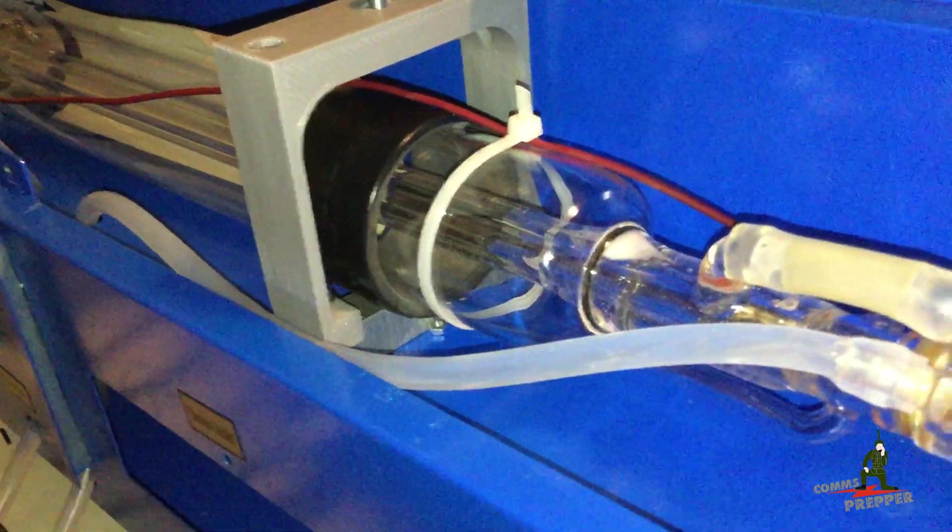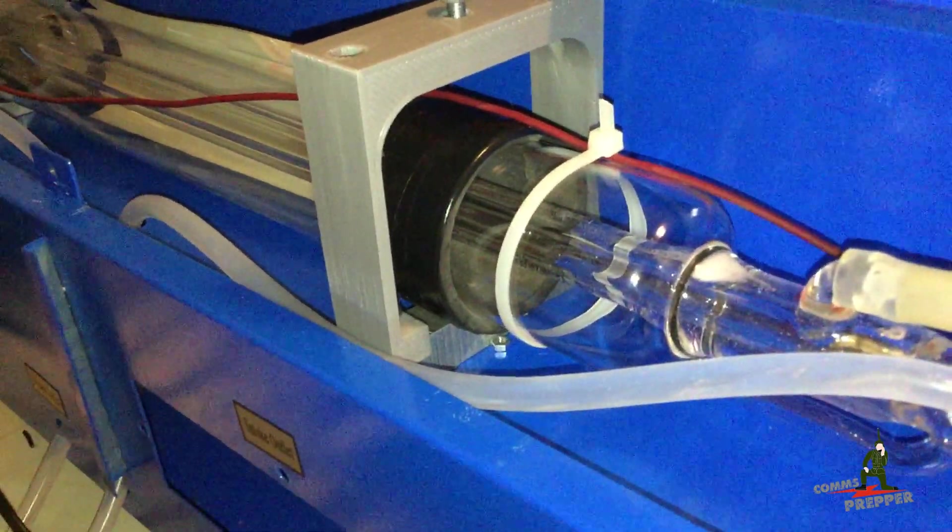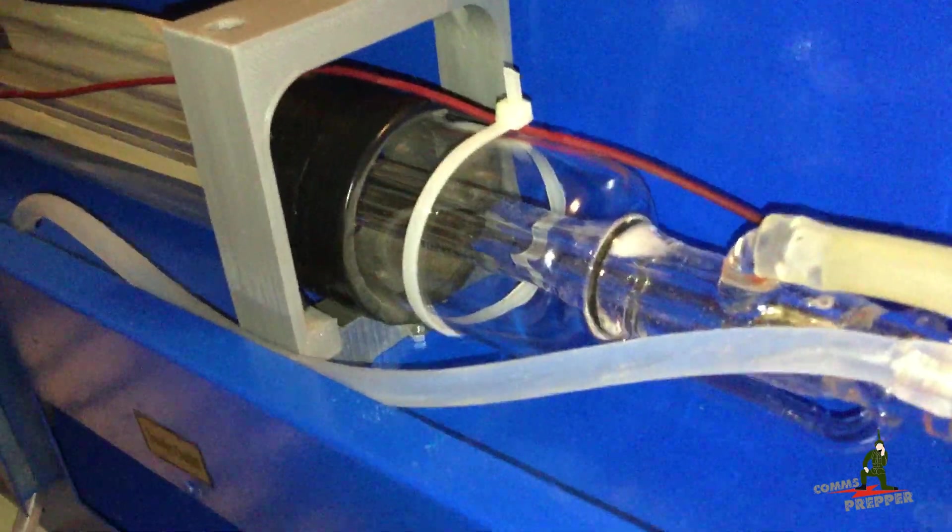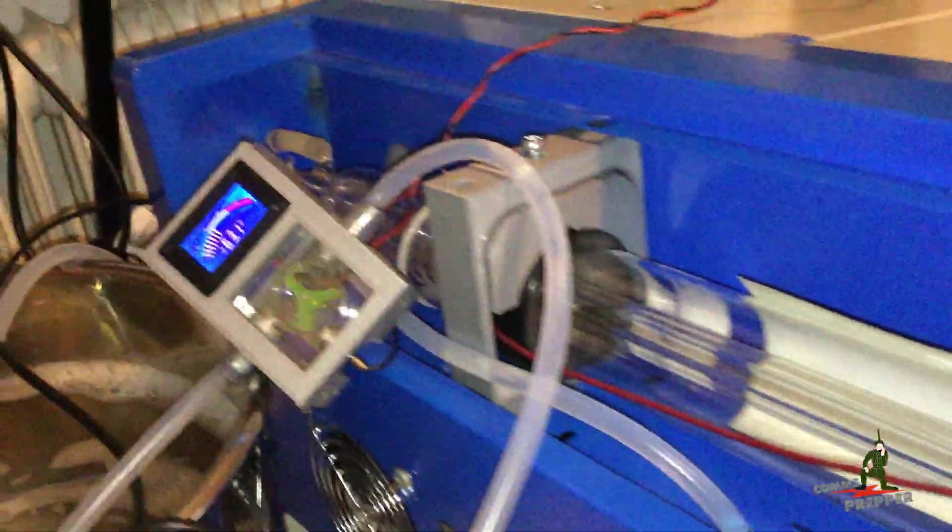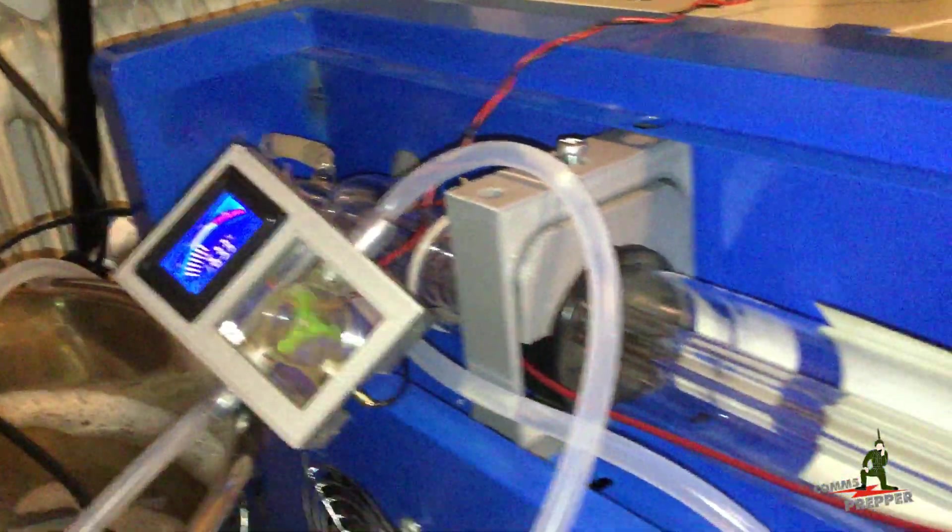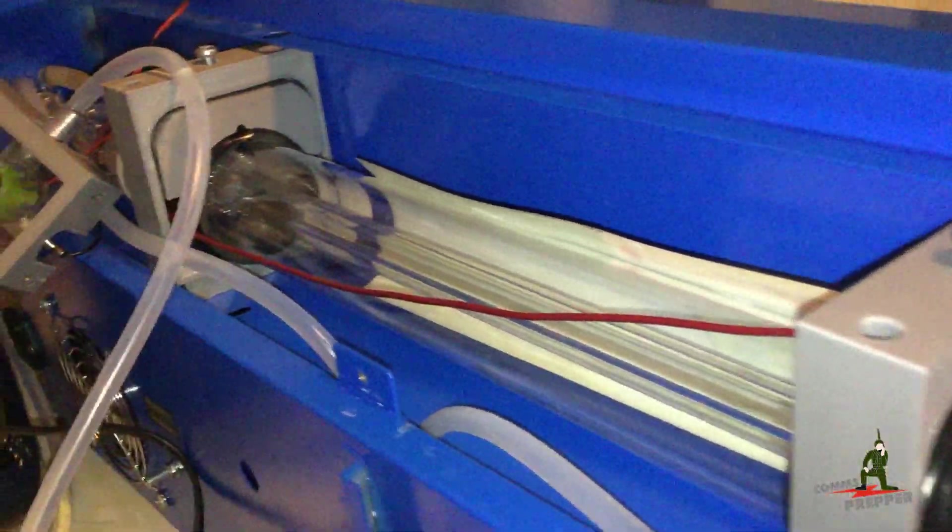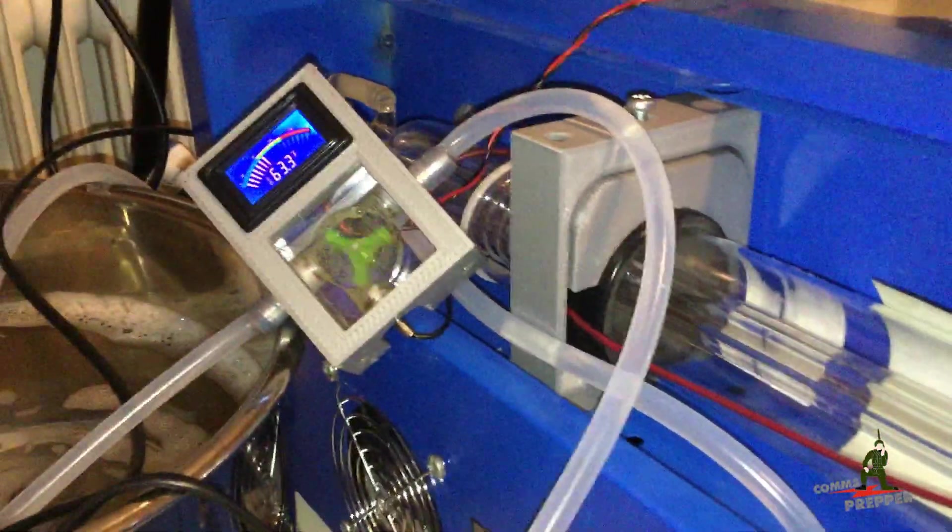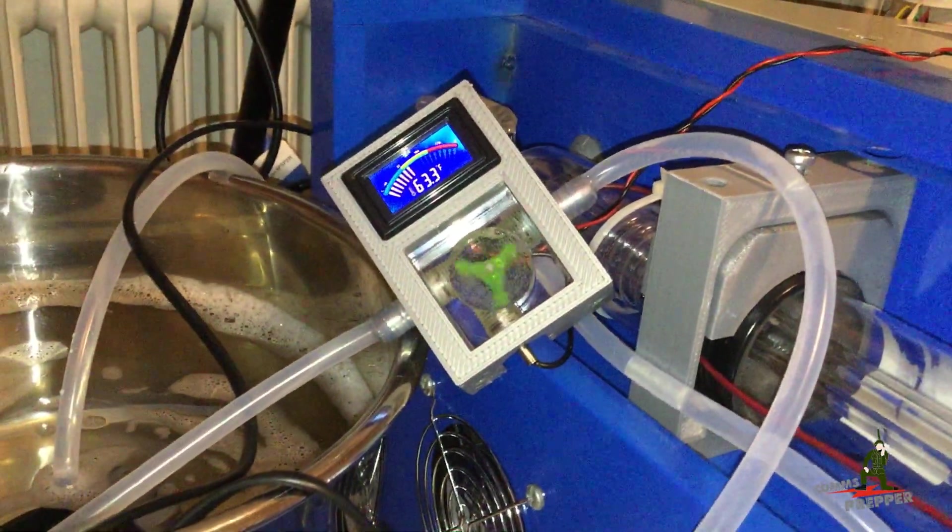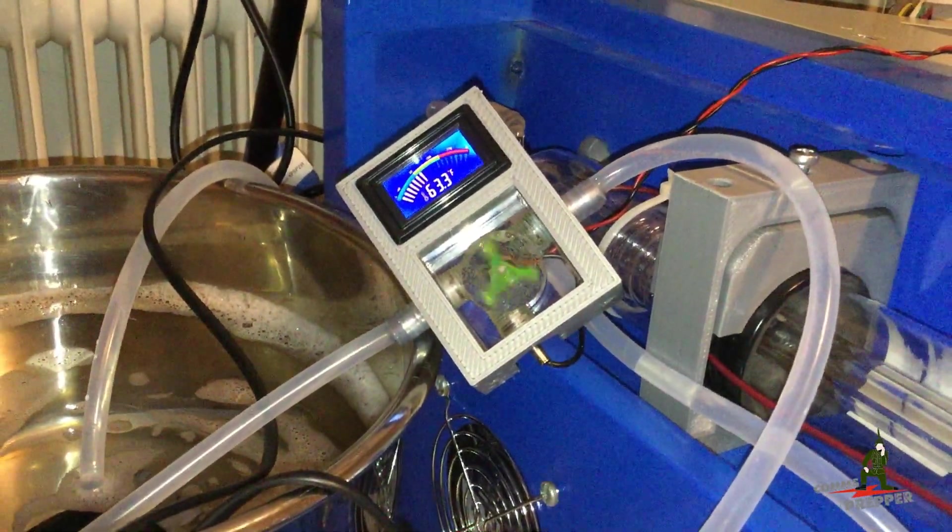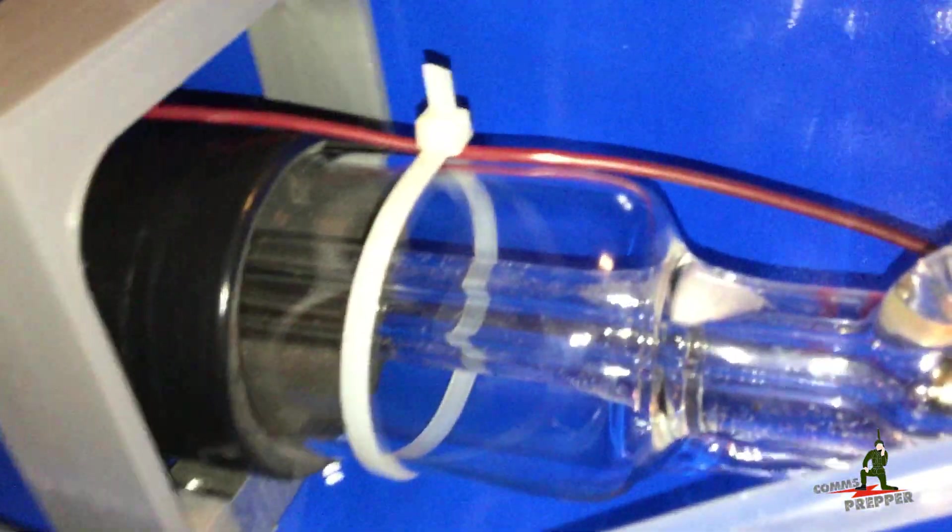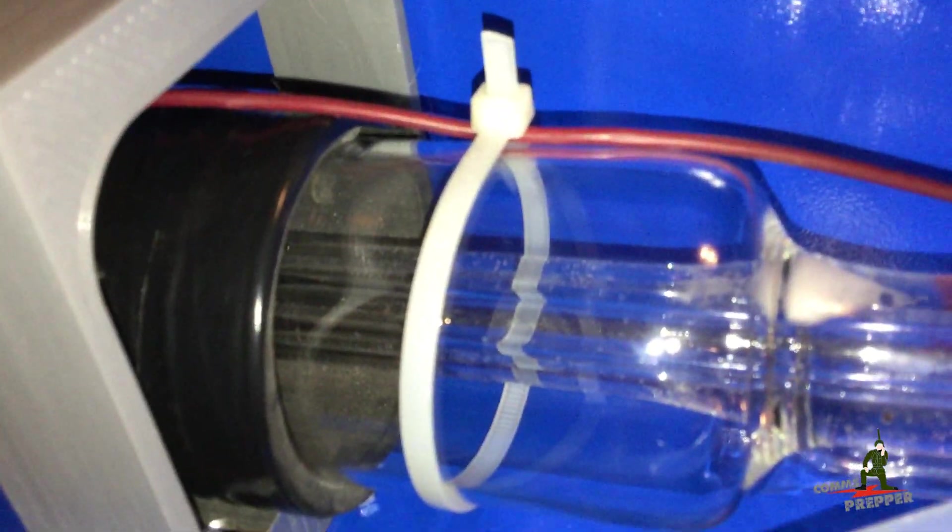Right now what I'm working on is priming the water cooling system for this 40 watt CO2 laser tube. You can see there's quite a few 3D printed parts here. I printed new brackets for mounting the tube, a new frame for the water flow indicator and the thermostat, and what I'm doing right now is priming the tube and working out all the air bubbles.